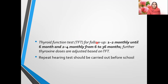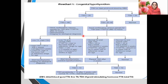TFT should be done every one to two monthly for the first six months, and every two to four monthly from six to thirty-six months. L-thyroxine doses are adjusted based on TFT. If a dosage change is made, a repeat test should be done within four weeks. A repeat hearing test should also be carried out before school age.